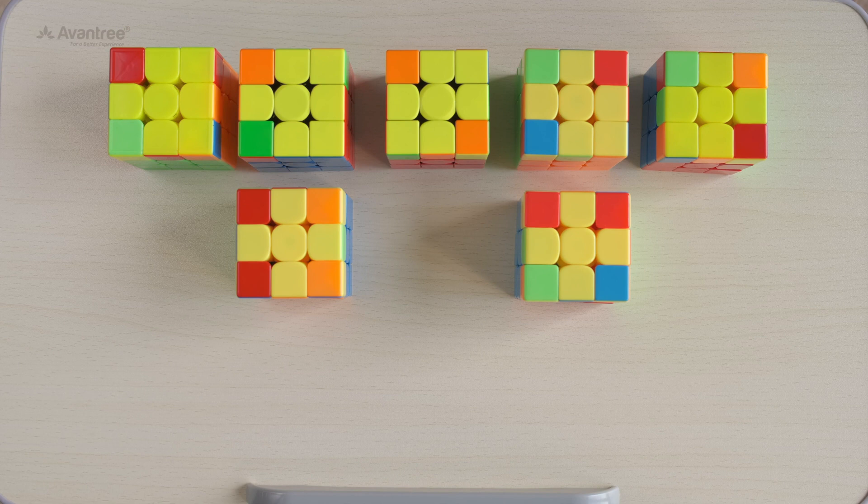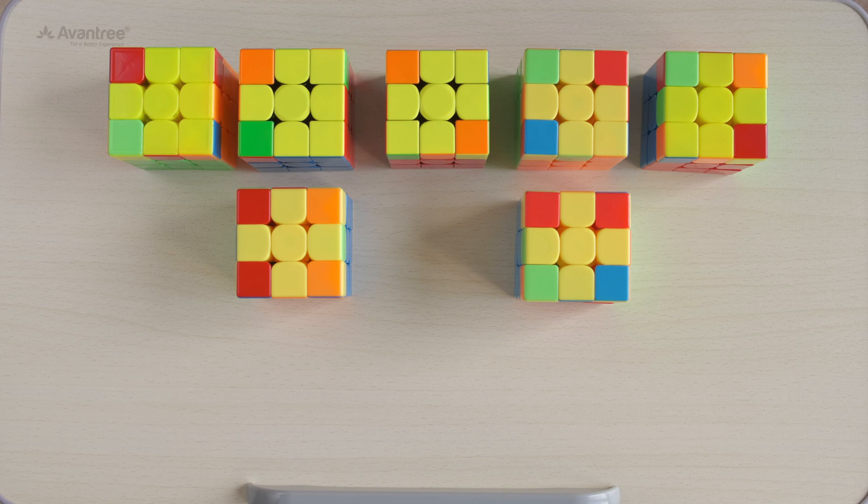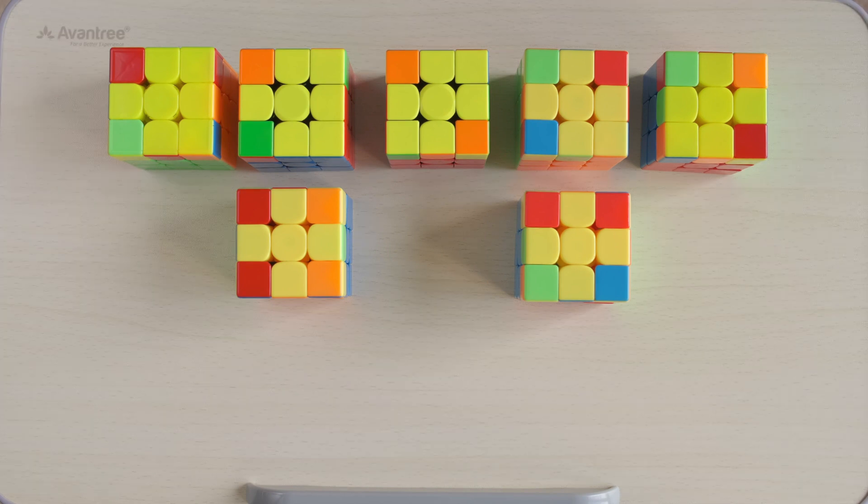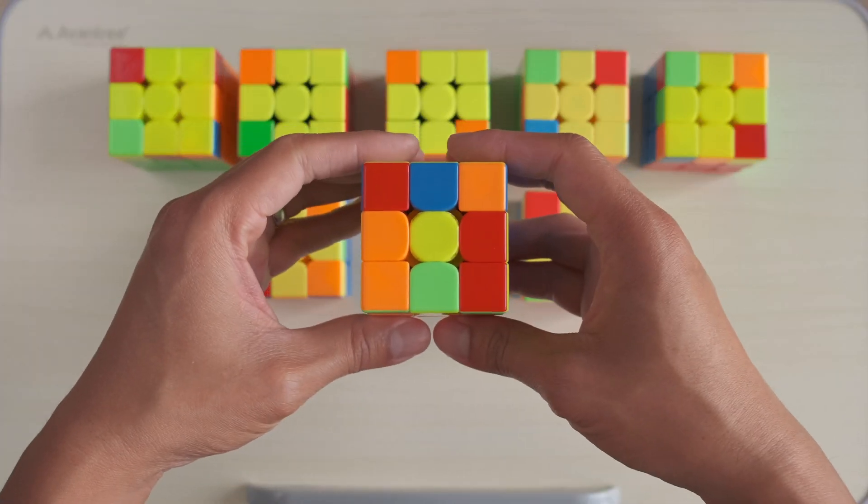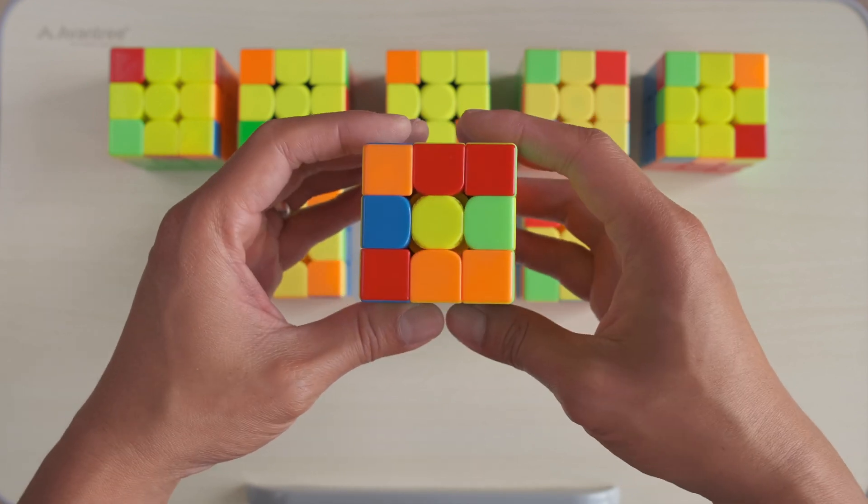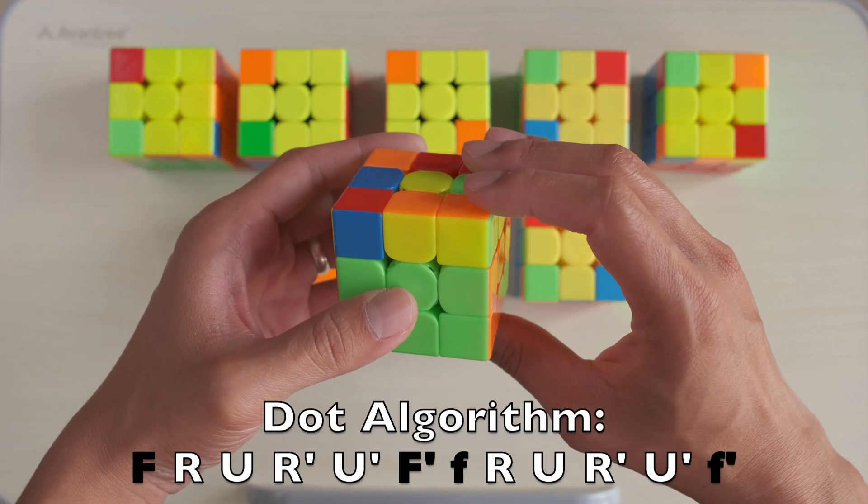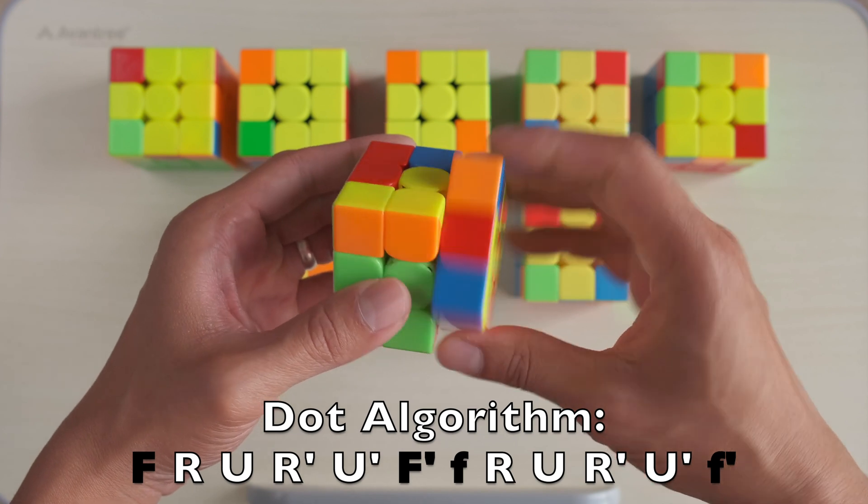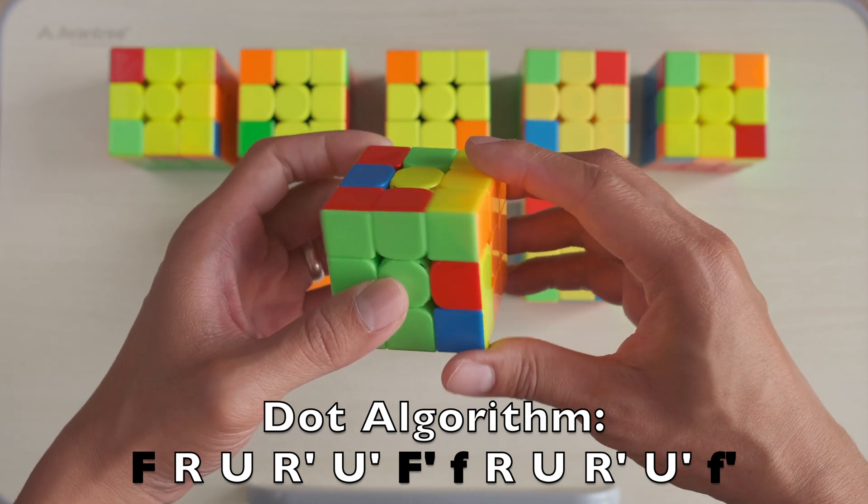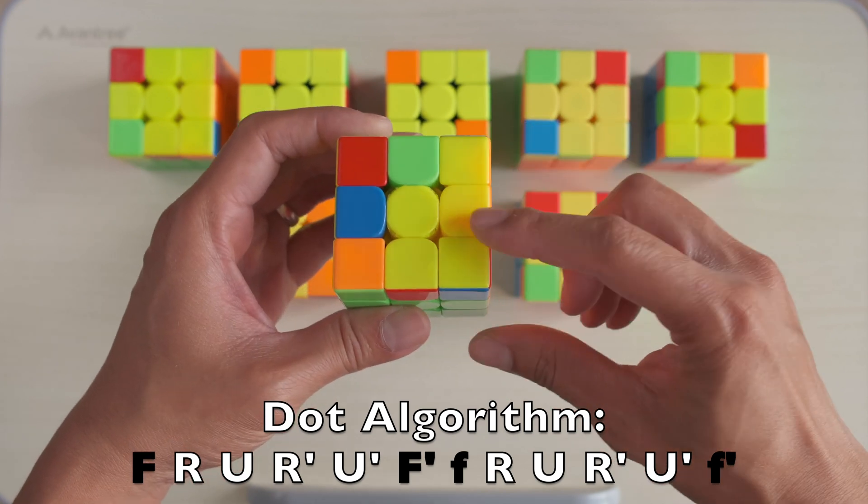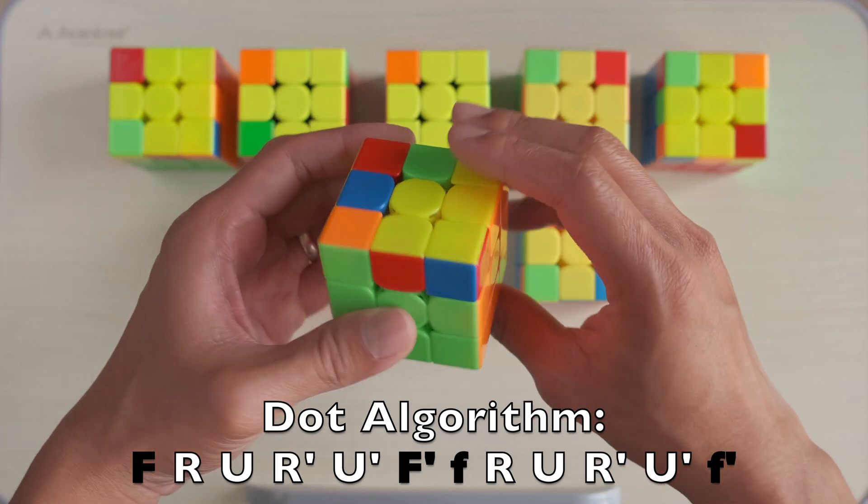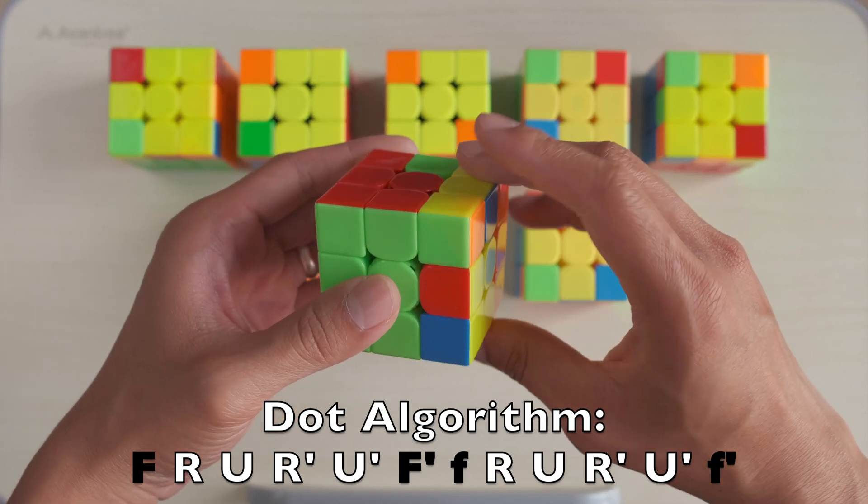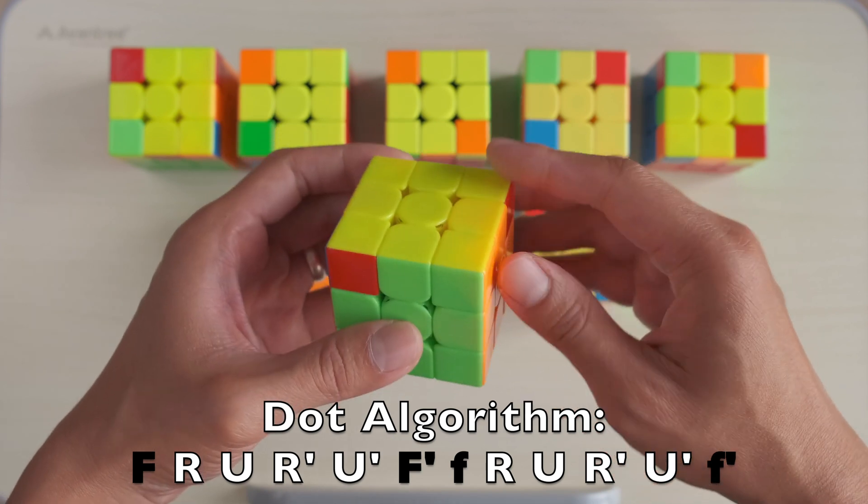Now if you were following closely, you may have realized that the dot algorithm was a combination of the first algorithm and the second algorithm combined. Here I will show you another dot scenario and we will follow the algorithm again. Here is the algorithm: F, R, U, R', U', F' – here is that small v, now that algorithm: small f, R, U, R', U', small f'.